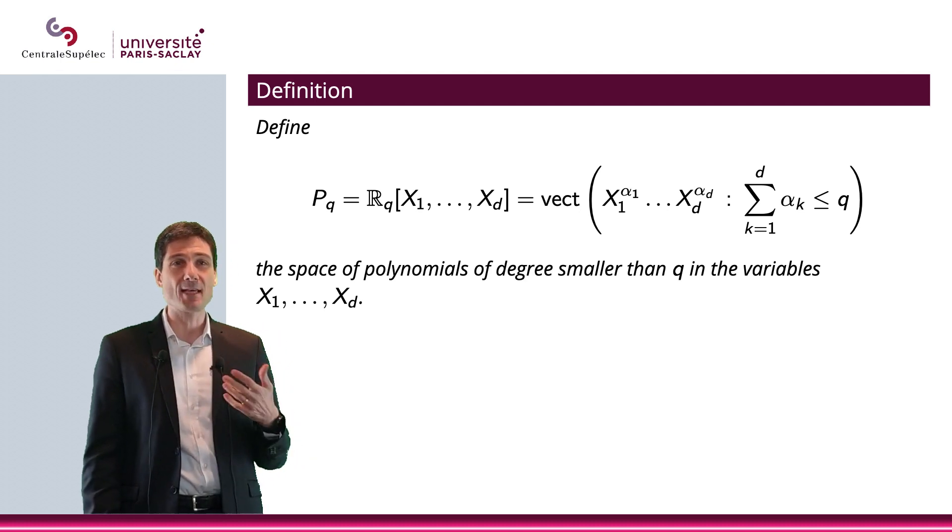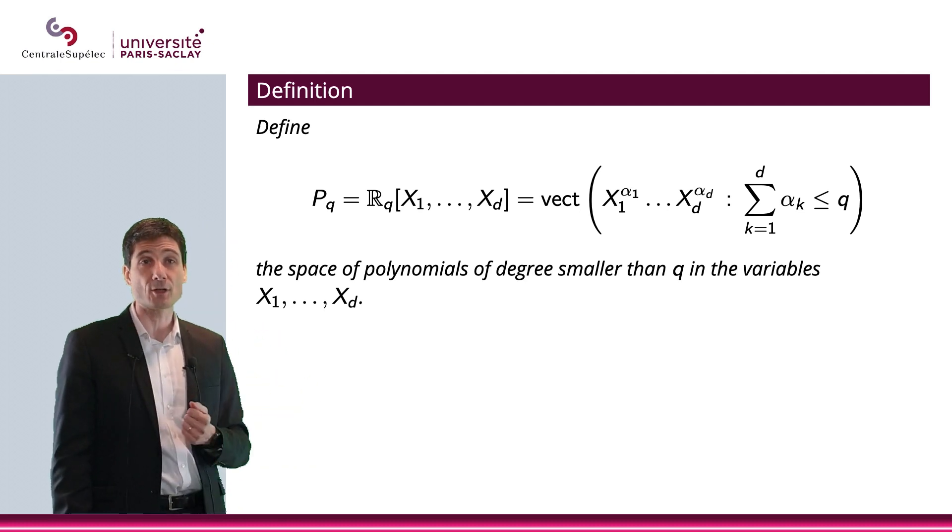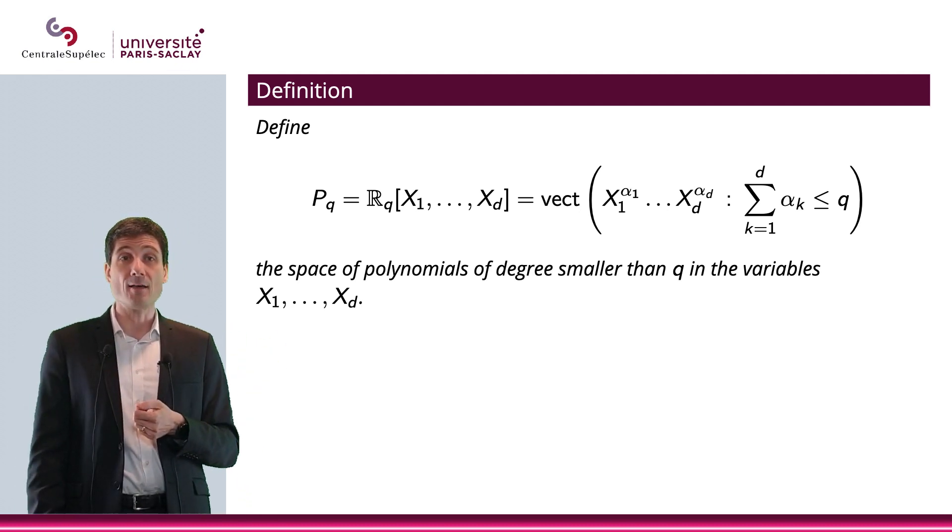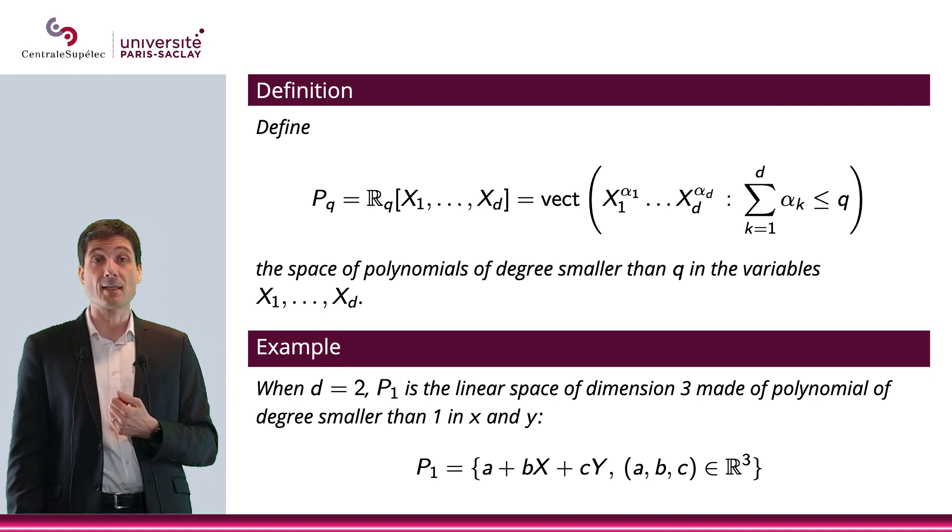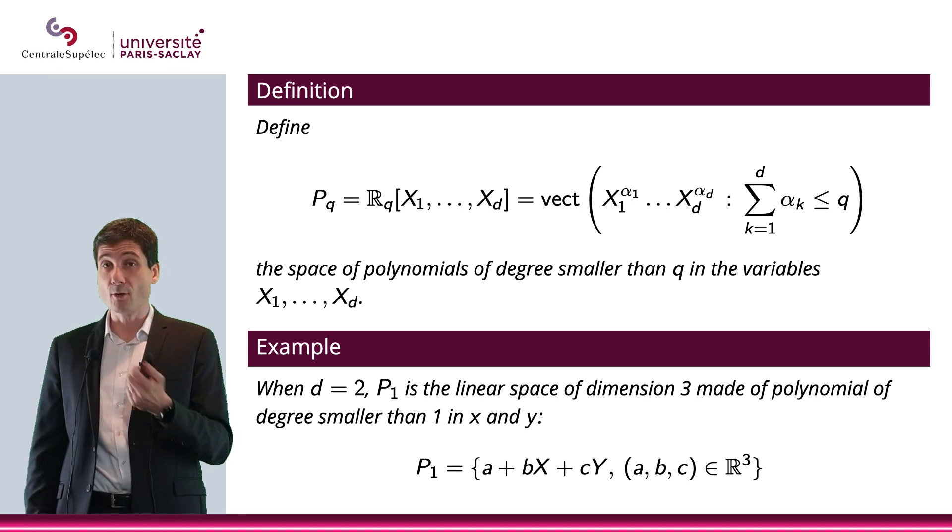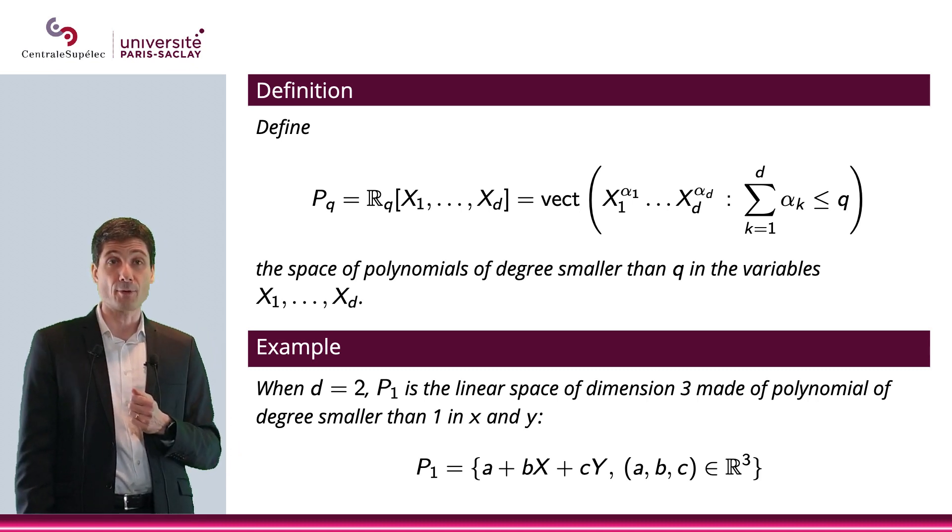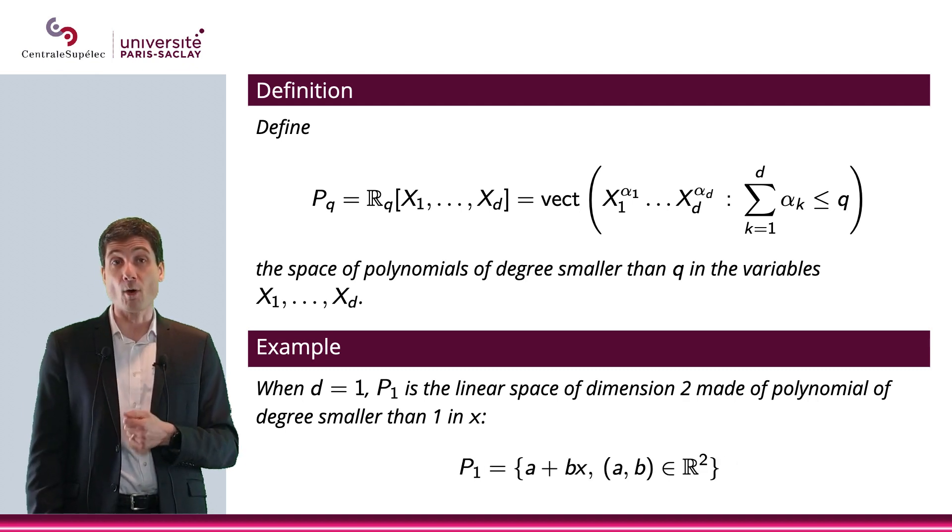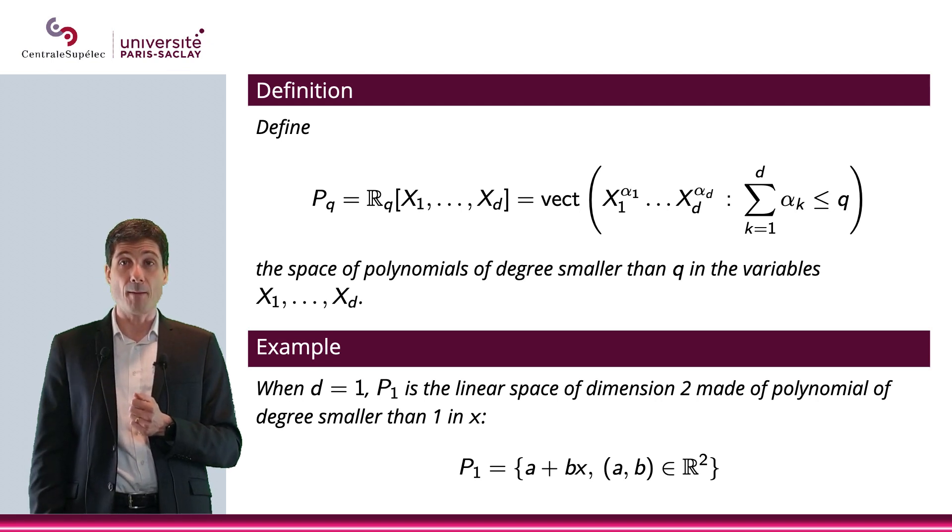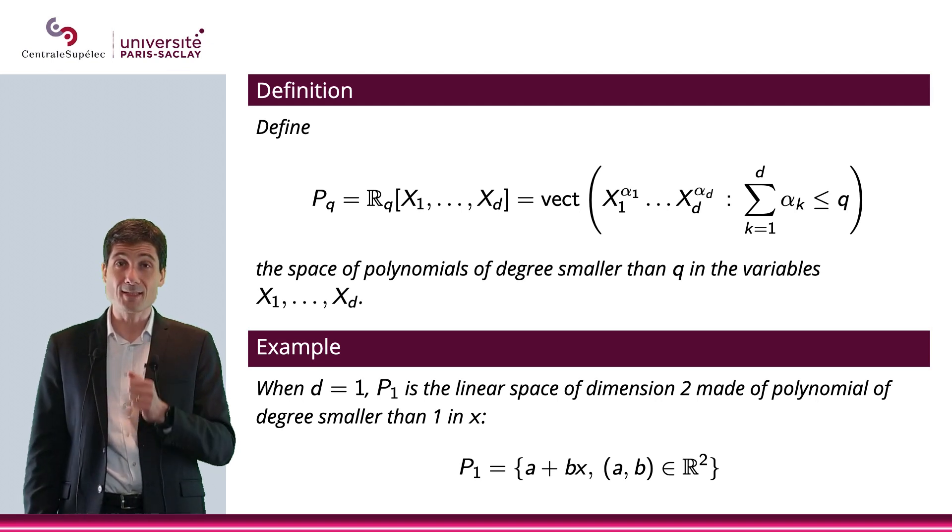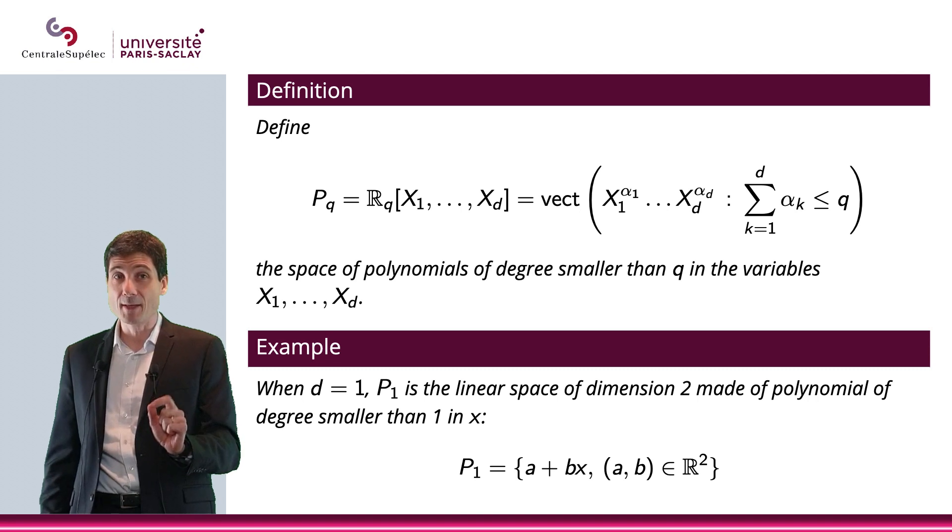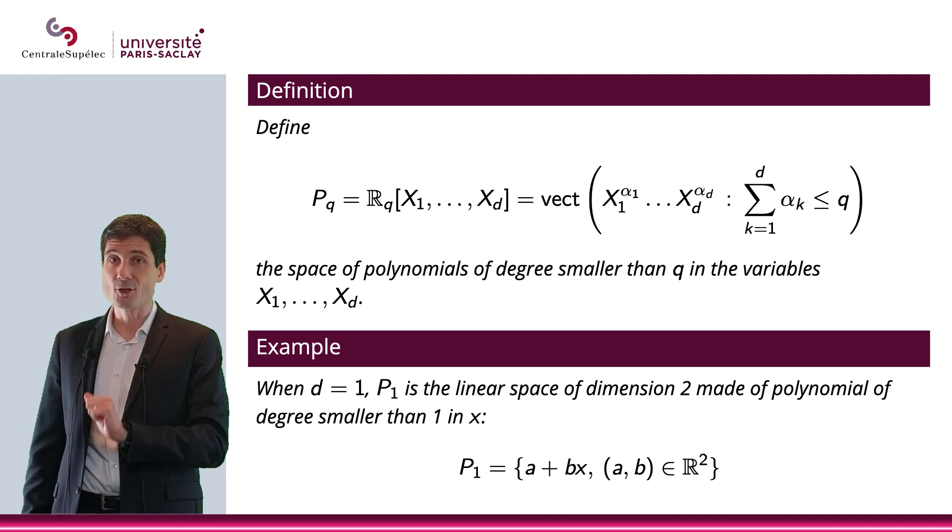Let me finish this video by a definition. P_q will be the polynomials of degree smaller than q with d variables. If you have d equal to 2, then P_1 is the space of a plus bX plus cY—so you have three components a, b, and c. If you're in dimension one, then you only have two: that's a plus bX—that is P_1. With this, we're going to move on to the next video where we're going to implement the P_1 method in dimension one.